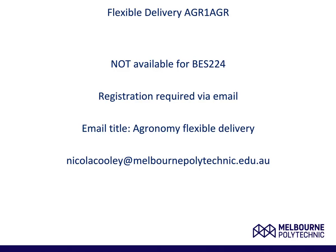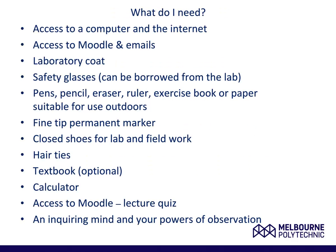For the flexible delivery pathway, I require that you register with me by sending an email — please put Agronomy 1 in the email title so I may search emails easily. You will still be required to come to the Weed workshop on the 7th of April this year. I require that you have access to a computer and the internet; if you do not, you will need to come into either the La Trobe or Melbourne Polytechnic libraries. You will also need access to Moodle and your Melbourne Polytechnic emails.